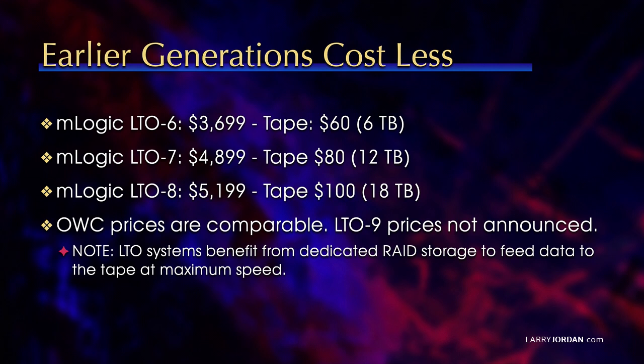Earlier generations cost less. For instance, an M-Logic LTO 6 costs about $3,700 and the tape is $60 per tape and holds 6 terabytes. An LTO 7 costs $4,900 — the tape is $80 per tape and holds 12 terabytes. An LTO 8 is $5,200 — the tapes are $100 apiece and hold 18 terabytes. OWC also sells LTO drives with comparable prices, and LTO 9 prices are not yet announced by either M-Logic or OWC.